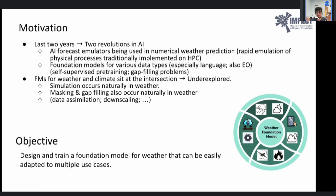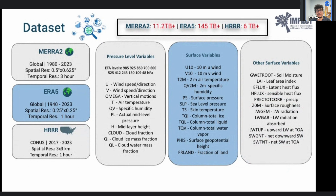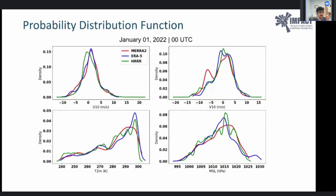The masking and gap filling problems in weather relate to data assimilation, downscaling, and simulations with partial differential equations. The datasets considered were MERRA-2 (~50 km resolution, ~11 TB), ERA5 (~25 km, ~145 TB), and HRRR (3 km but only over the US, ~6 TB). These datasets include different variables across pressure levels. Crucially, comparing the same variable — say wind vector U — across datasets shows significantly different probability distributions because each uses different cost functions for their simulation processes.